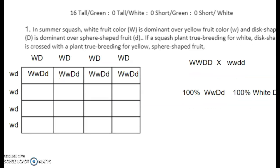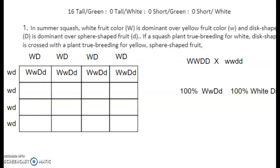Number one: in summer squash, bright white fruit (big W) is dominant over yellow fruit (little w). Disc-shaped fruit (big D) is dominant over sphere-shaped fruit (little d). If a squash plant is true-breeding — meaning purebred or homozygous — for white disc-shaped fruit...